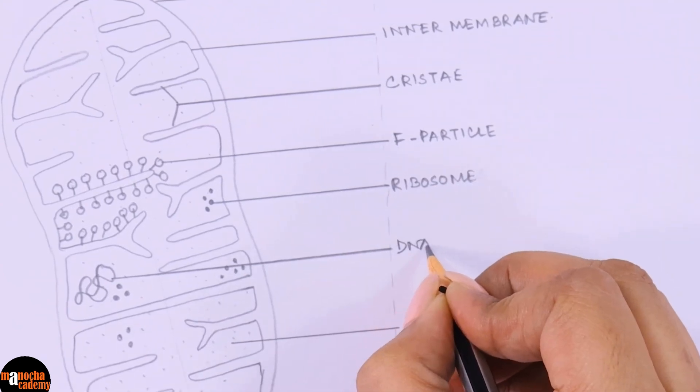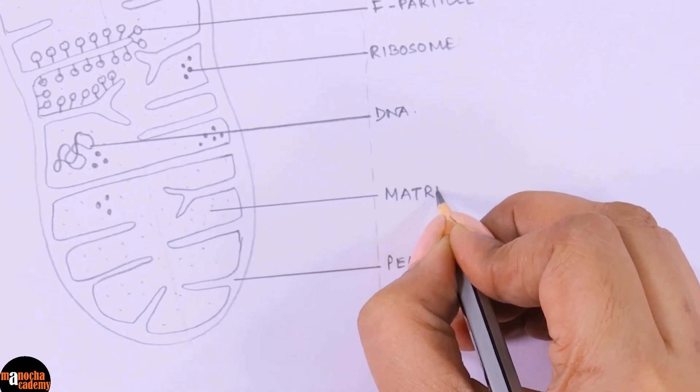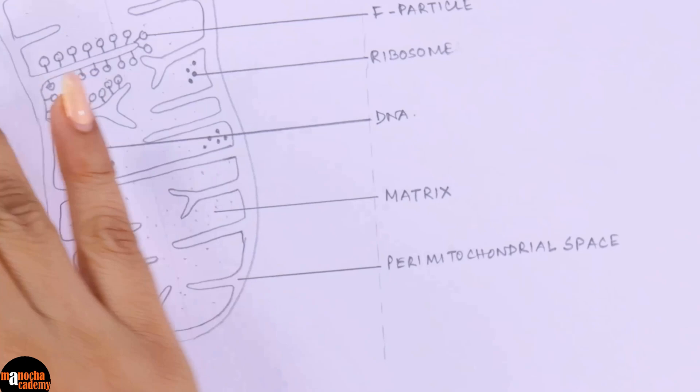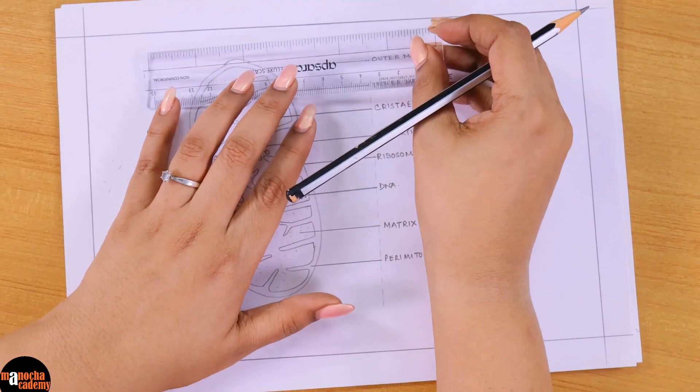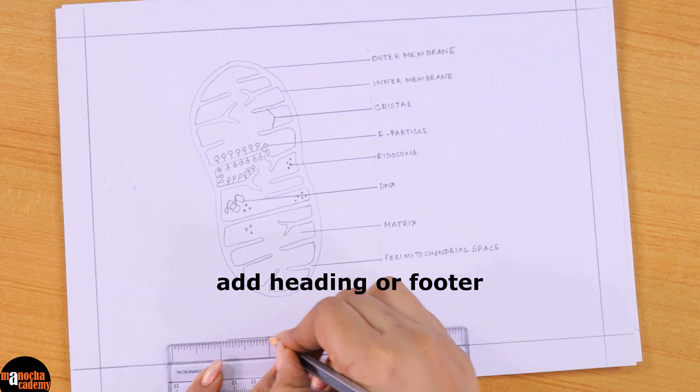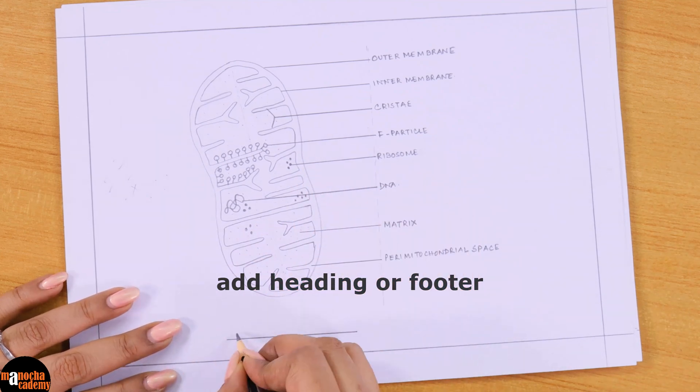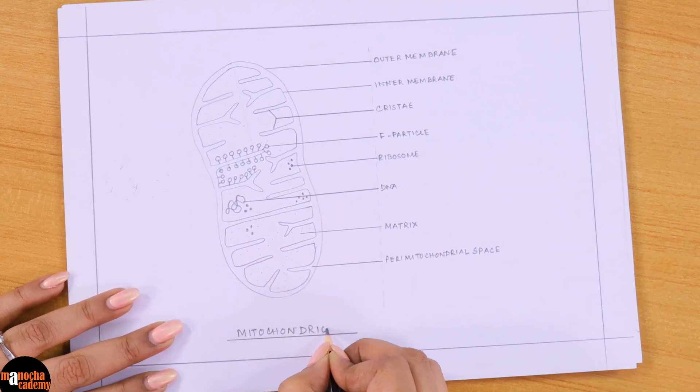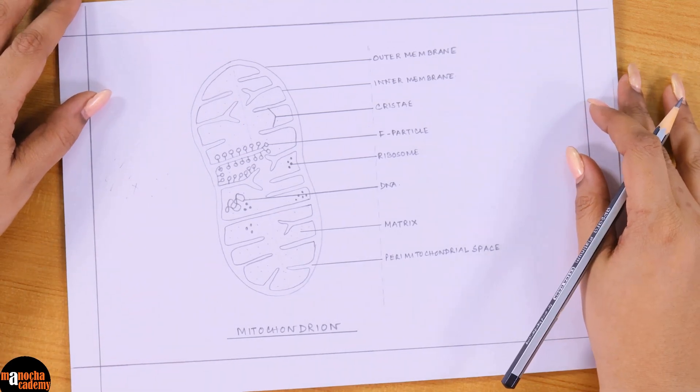Then we label the ribosomes. This is the DNA, and finally the matrix. That is the structure of our mitochondria. As always, do not forget to give a heading or a footer. Since this is a single mitochondrion, I will write mitochondrion, but if you are drawing more than one, you can write mitochondria.